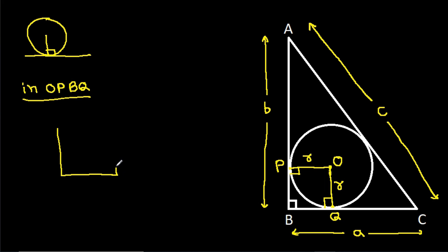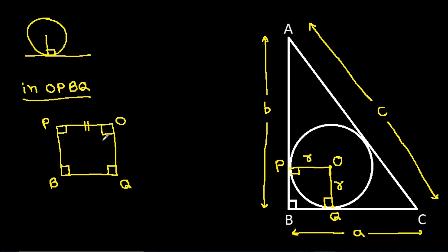In OPBQ, the vertices are O, P, B, Q. This angle is 90 degrees, this angle is 90 degrees, this angle is 90 degrees — so this angle will also be 90 degrees. And we have PO equal to QO, that is R. That means OPBQ will be a square.